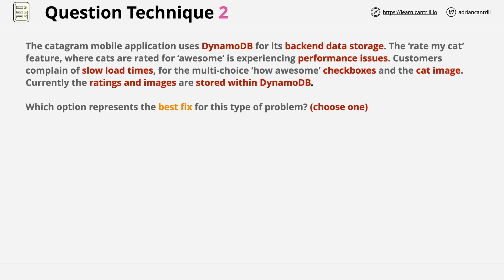I also spotted back-end data storage, which is an odd term, but I'll come back to that in a moment. I also noticed that users of the application were experiencing performance issues, mentioned as slow load times. This could be an application problem or it could be a database problem. The question points out that the checkboxes and the cat image are both loading slow.